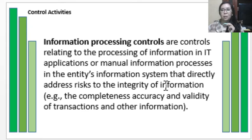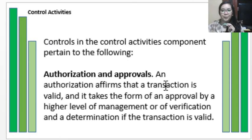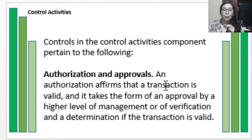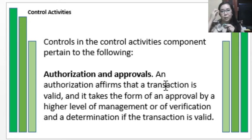Information processing controls address integrity concerns such as the completeness, accuracy, and validity of transactions and other information — essentially how information is processed and turned into an output or report. The first type of control under control activities is authorization and approvals. Authorization affirms that a transaction is valid.